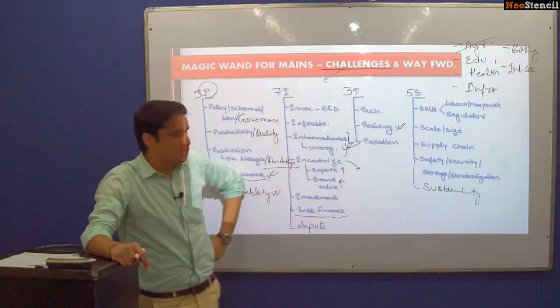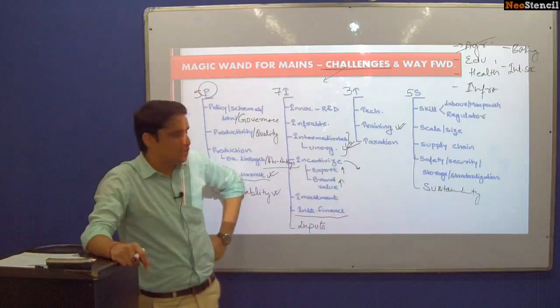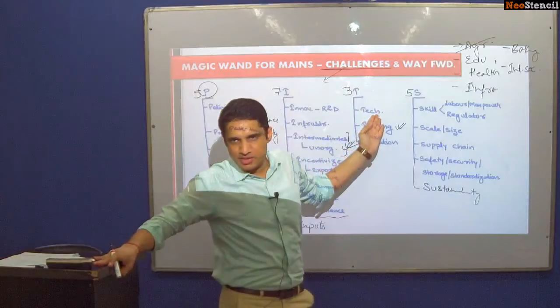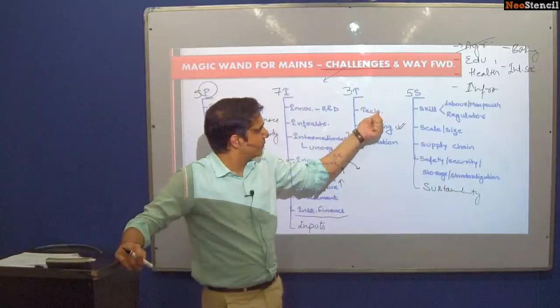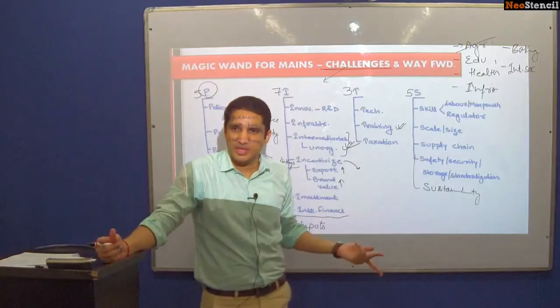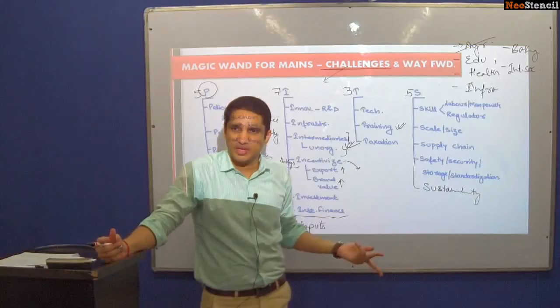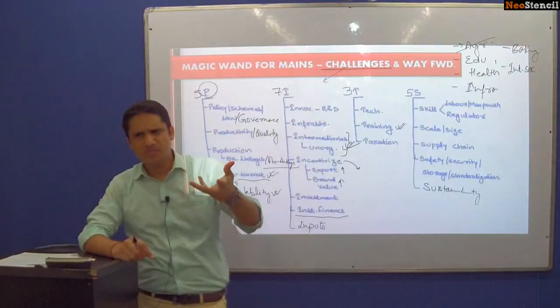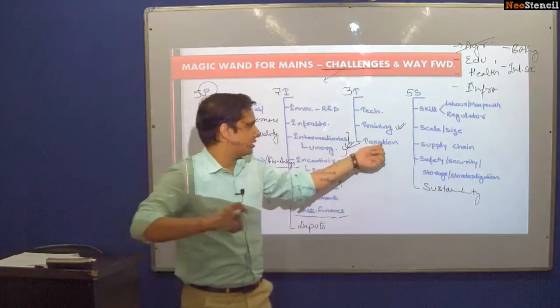Institutional finance is a problem, as are inputs. Under the 3 T's: technology is a major problem — pedagogy is not good, projectors and modern tools are lacking. Training of teachers is required as well as hands-on training for students — tinkering labs, of which only 9,500 have been opened. Taxation: schools get tax relaxation for acquiring land and infrastructure maintenance, but they charge very high fees — taxation is being misused.